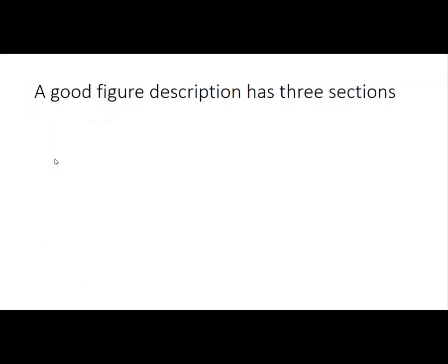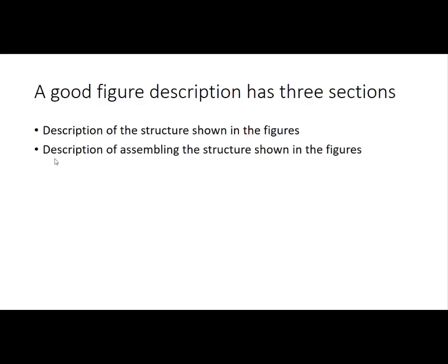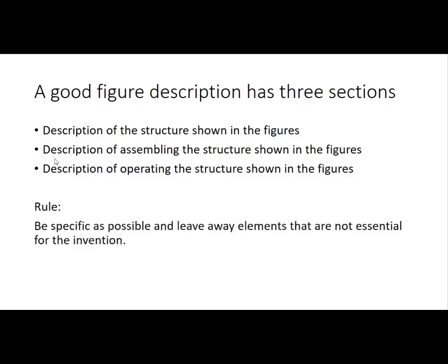A good figure description has three sections. The first one, which you have just seen, is the description of the structure shown in the figures. The second section is a description of assembling the structure shown in the figures — by doing so you would know whether you have assigned a proper reference numeral to all essential parts. The third section of a good figure description is a description of operating the structure shown in the figures, which would result in method claims. The rule here is: be as specific as possible and leave away elements that are not essential for the invention. By doing so you get a good figure description which is not too long.